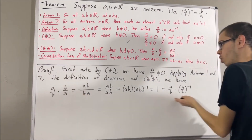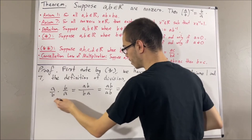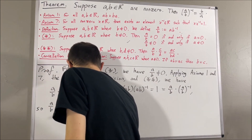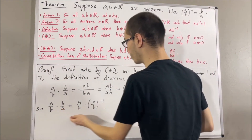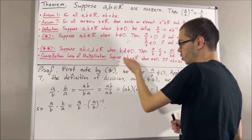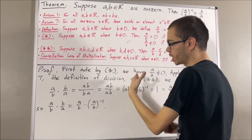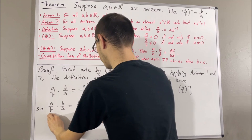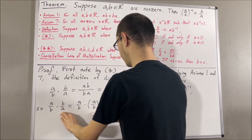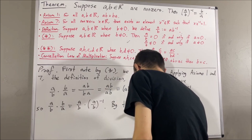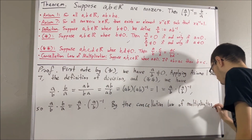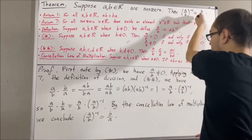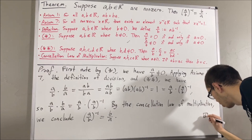And so, through this chain of equalities, we have shown that A over B times B over A is equal to A over B times the reciprocal of A over B. Now, we're in a position to apply the cancellation law of multiplication. Applying the cancellation law of multiplication, since A over B is not equal to 0, we can cancel out the A over B's and we're left with B over A equals the reciprocal of A over B. And that is exactly what we wanted to prove, so this completes the proof.